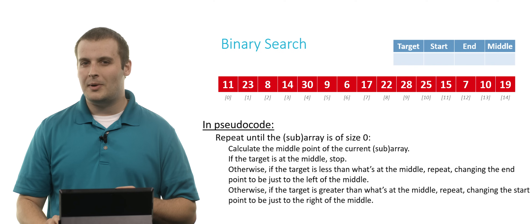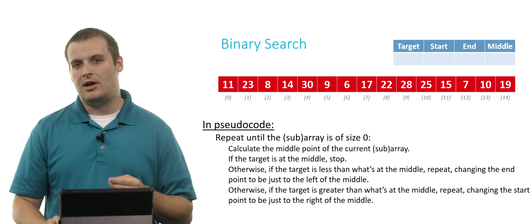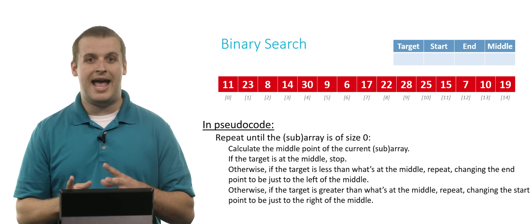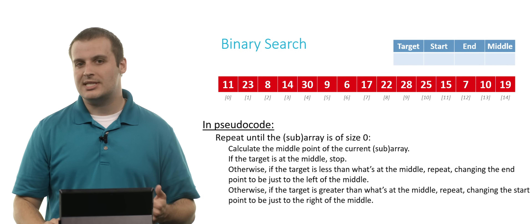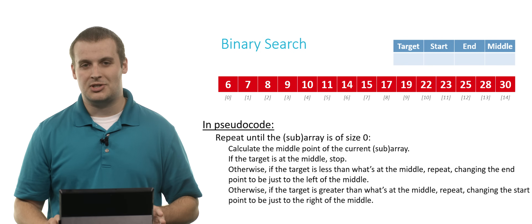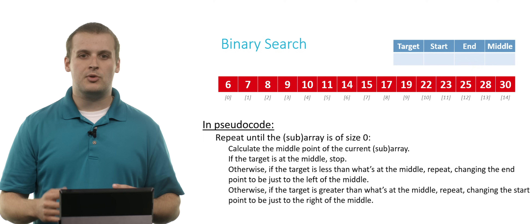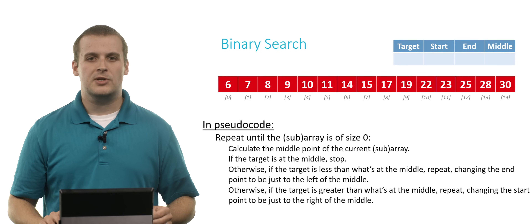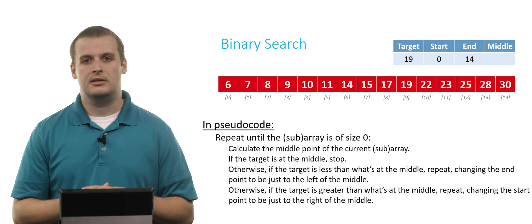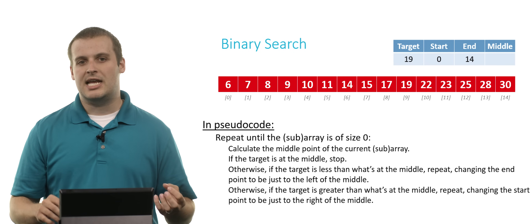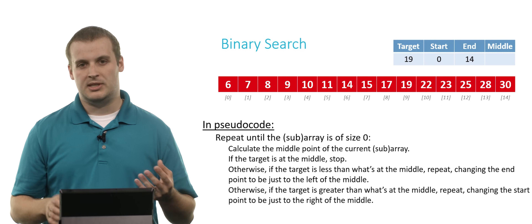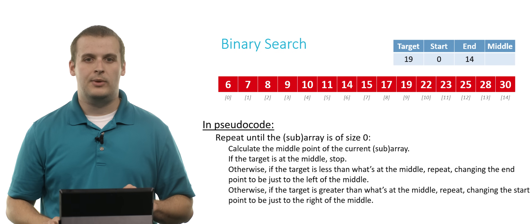Before we can perform binary search, remember: we can't do it on an unsorted array, or else we risk accidentally discarding values when we ignore half the array. So step one is you must have a sorted array — you can use any sorting algorithm to get there. Now we're in a position to perform binary search. Let's say we're looking for the value 19. The first element is at index 0 and the last is at index 14, so those are our start and end points.